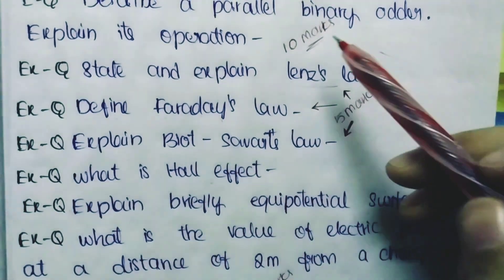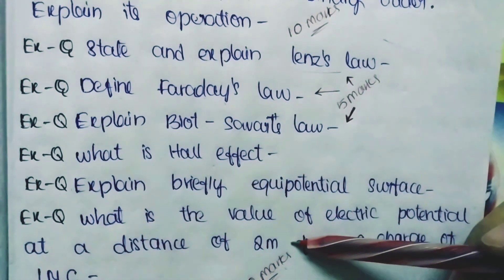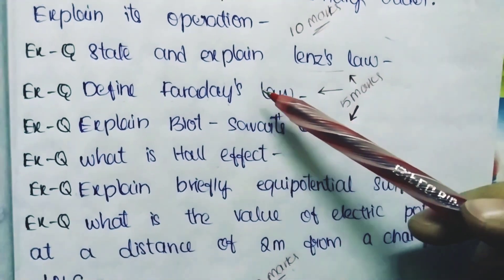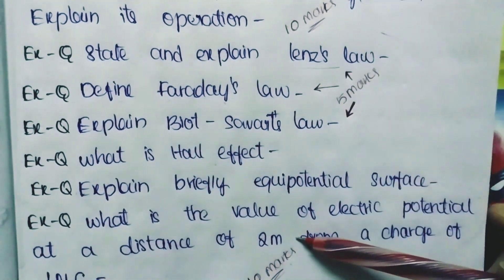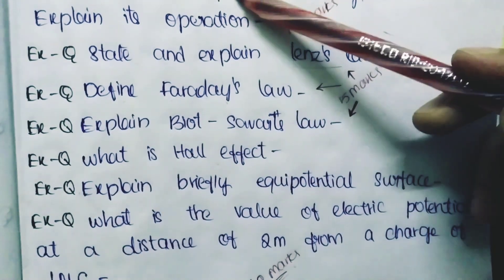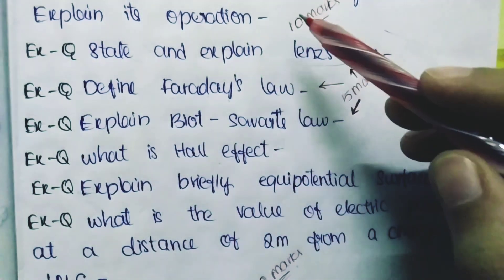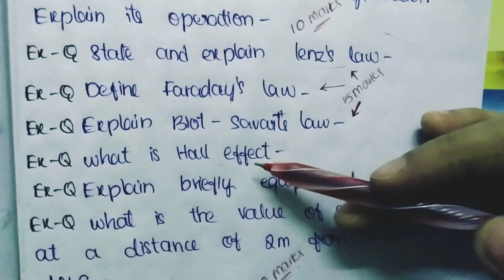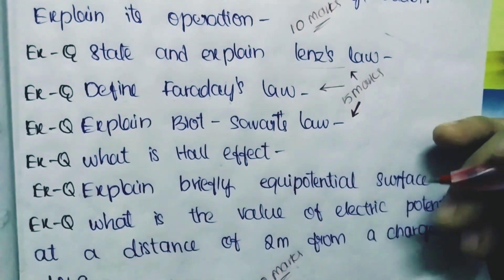These two 10-mark questions were not included in the 15 important questions. The thumbnail said 15, but in reality it came to 17, so to avoid being fake, 15 very important questions were kept separate and the extras were added as extra questions. So 15 plus 7 equals 22 questions total. Whether to prepare all 22 or just 15 is completely up to you.